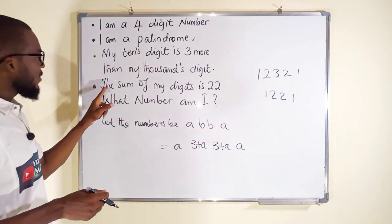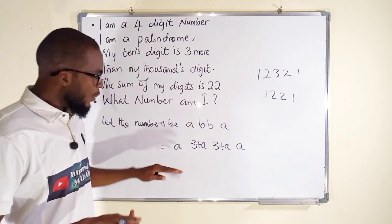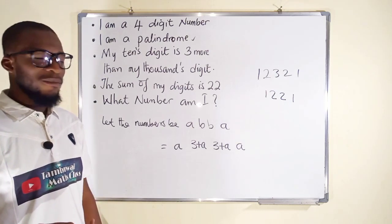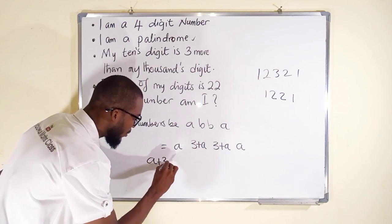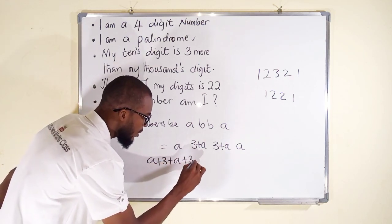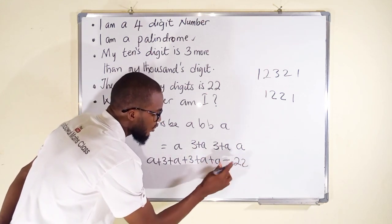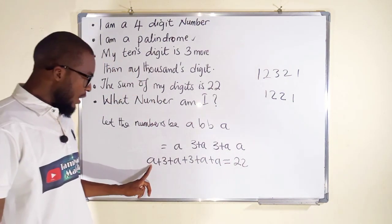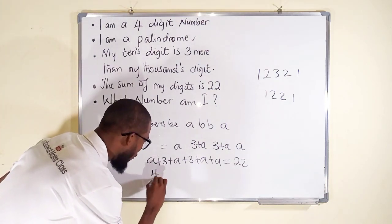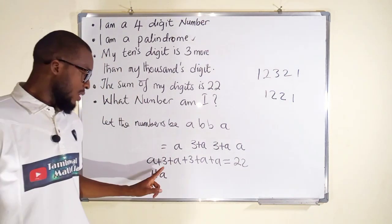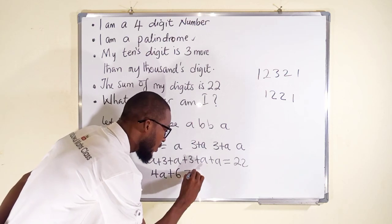The problem says that if you add all of these digits together you obtain 22. So we add all the digits and set them equal to 22: A + (3+A) + (3+A) + A = 22. There are four A's, giving 4A, and two 3's, giving 6, so we have 4A + 6 = 22.